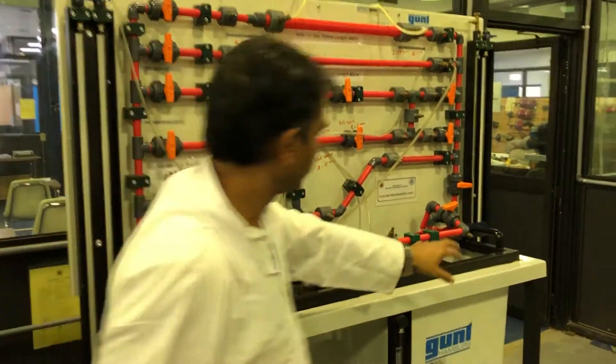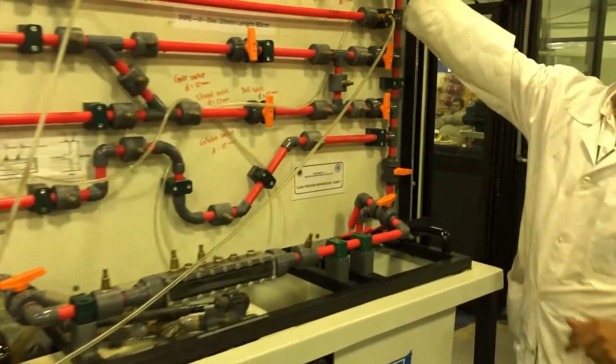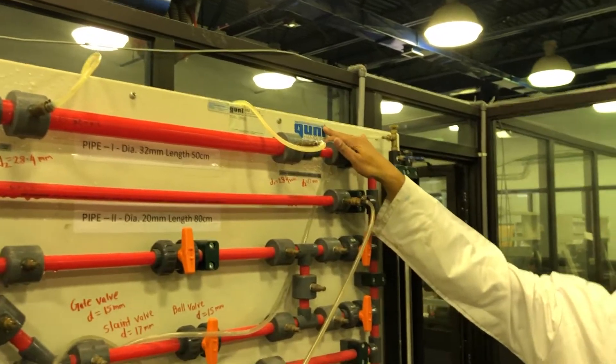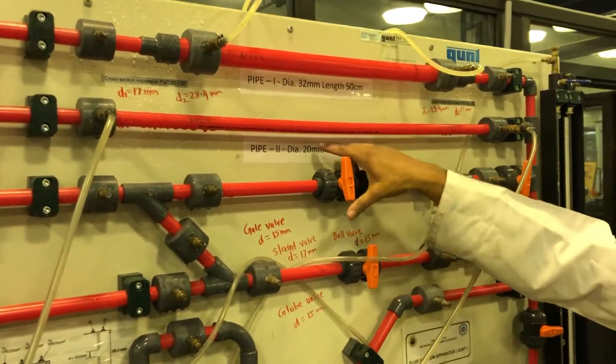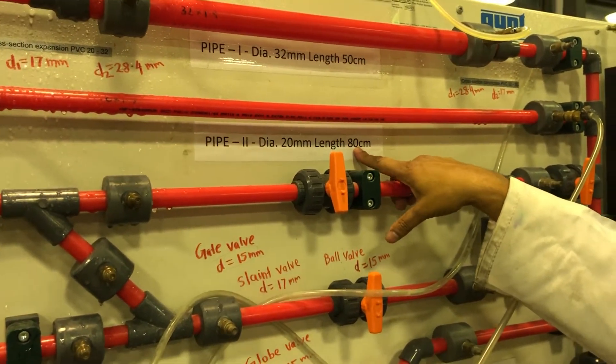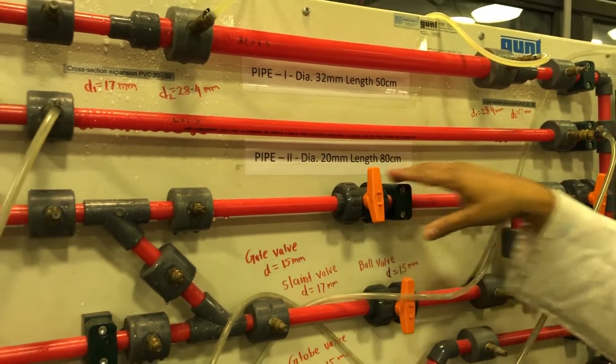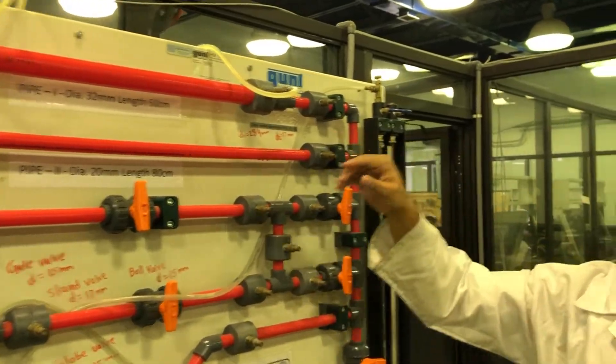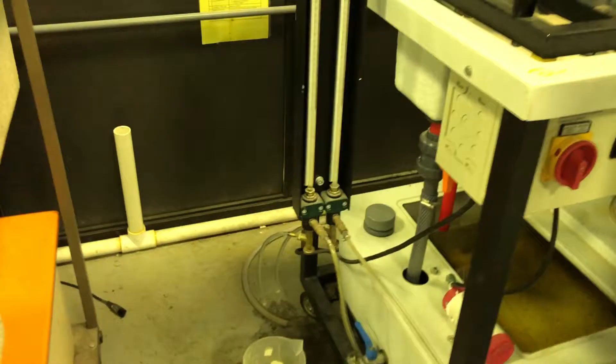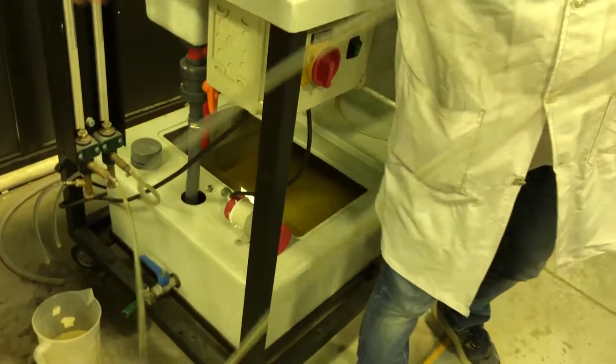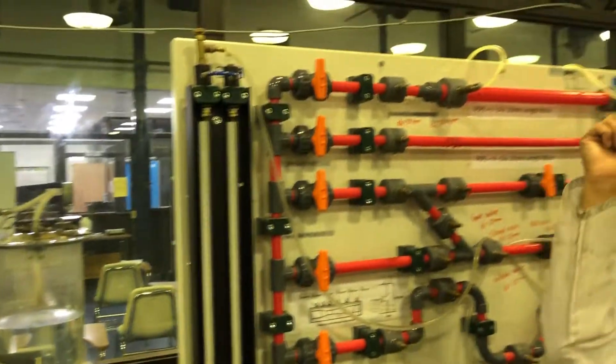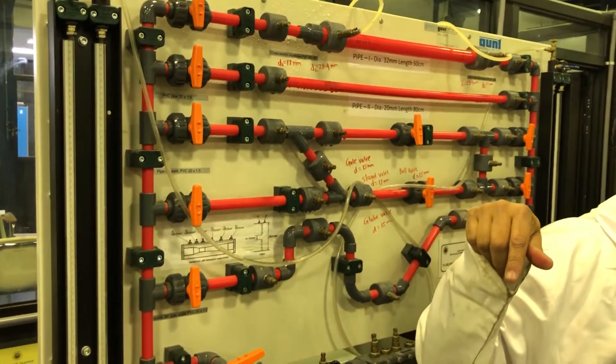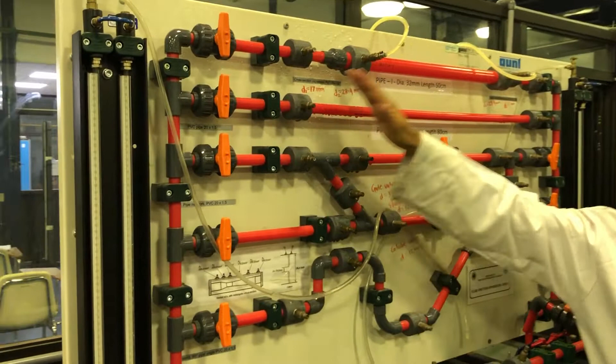This is the fluid friction apparatus. I'm asked to select pipe number two with length 20 and diameter 20. I will connect the U-tube manometer. This is a U-tube differential manometer with water inside. We need to find the pressure drop between point one and two, inlet and outlet.